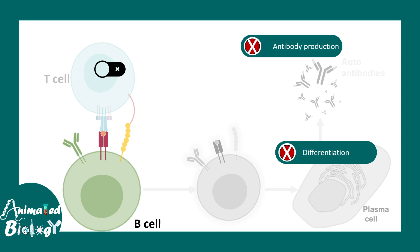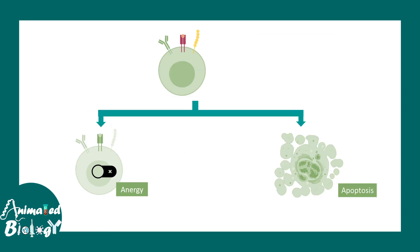In many diseases this peripheral tolerance mechanism goes wrong, increasing the chance of autoimmune disorders, which will be discussed in separate videos. Just like T cells, B cells can also undergo anergy or apoptosis. Overall, peripheral tolerance works through three main processes: anergy, apoptosis, and negative stimulation — all ensuring auto-reactive cells do not persist in the periphery.